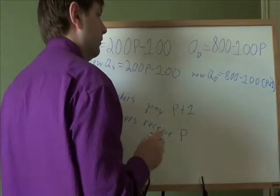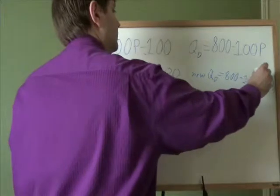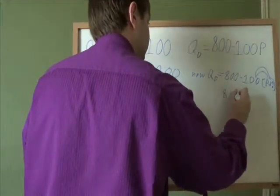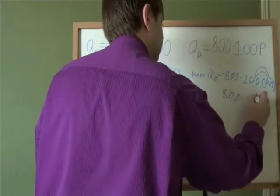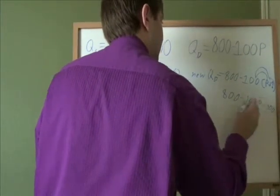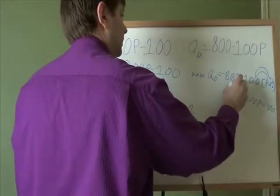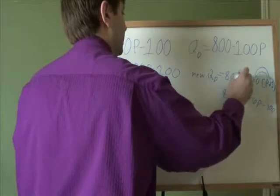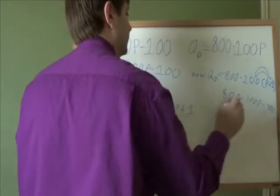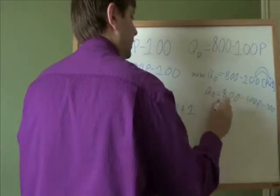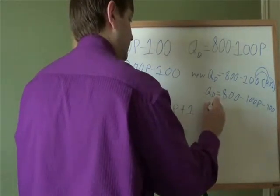And then let's simplify that. That first step is going to be to distribute. And notice that this minus 100 gets multiplied by p, giving you negative 100p. And that minus stays with that 100 as you multiply it by the 1 to give you minus 100. And then from there, we can combine like terms.